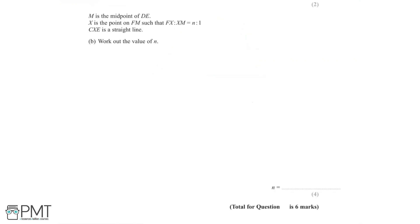We are told that M is the midpoint of DE, and X is the point on the line FM such that the ratio FX to XM is equal to N to 1. We are also told that CXE is a straight line. In part B, we need to work out the value of N.